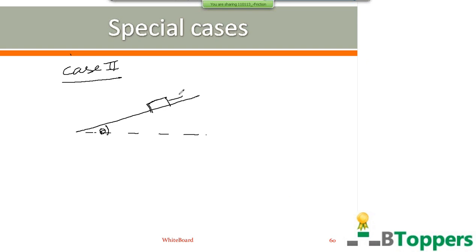Let F denote the magnitude of the force applied on the block parallel to the inclined surface in order to move the block up along the inclined plane. The weight mg of the block acts vertically downwards.